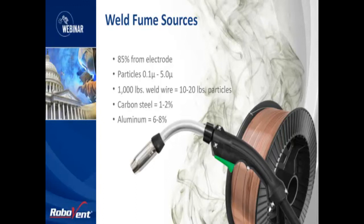To give you an idea how small a 0.1 micron particle is — a 0.1 micron particle is on the upper end of the size of a virus. And even more visual is this: it takes 254,000 of them all in a straight line to make one inch. The human hair is about 100 microns in diameter on average, so the human hair can be about 1,000 times the diameter of a weld fume particle. We're talking about very, very small particles here.